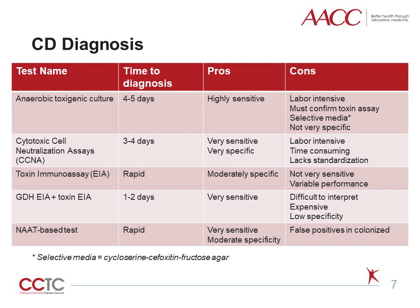C. diff was historically difficult to grow, even in strict anaerobic culture, with a sensitivity around 67% to 75%. A selective media, cycloserine-cefoxitin fructose agar, has been used specifically for culturing C. difficile, but this method still requires several days and a separate toxin confirmation assay. Cell cytotoxicity neutralization assays, CCNAs, detect toxin directly in the stool, but are also labor and time intensive.